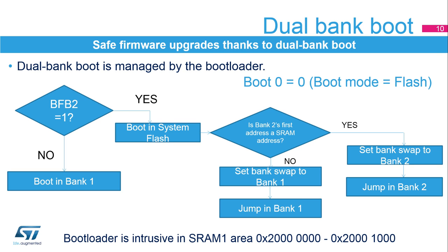If the BFB2 option bit is cleared, the device boots in flash bank 1. If the BFB2 option bit is set, the device boots in the system flash memory. The bootloader checks the bank's first address, as it must read the stack pointer at that location. If bank 2's first address is a valid SRAM address, the bootloader swaps the banks to remap bank 2 at address 0 and jumps into bank 2. If it is not valid, the bootloader swaps the banks to remap bank 1 at address 0 and jumps into bank 1.